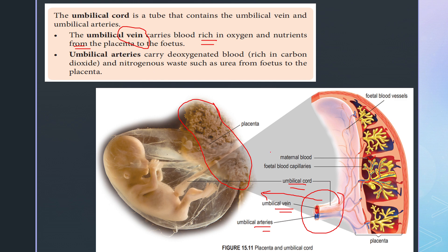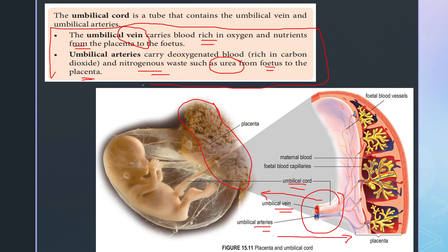The umbilical artery functions to carry deoxygenated blood from the fetus to the placenta — deoxygenated blood meaning blood rich in carbon dioxide and nitrogenous waste such as urea. Take note that this is a little different from the norm, because usually veins carry deoxygenated blood and arteries carry oxygenated blood, but not in this case — it is vice versa.